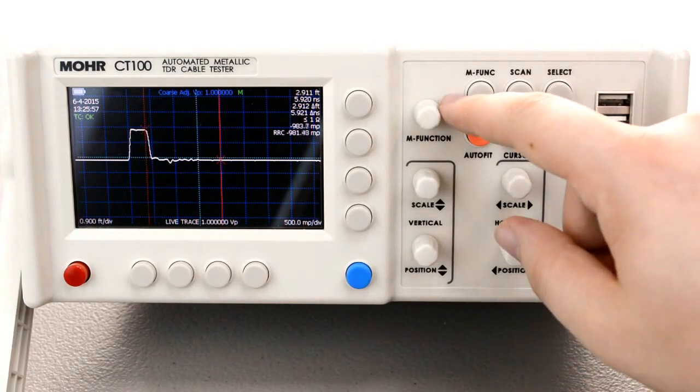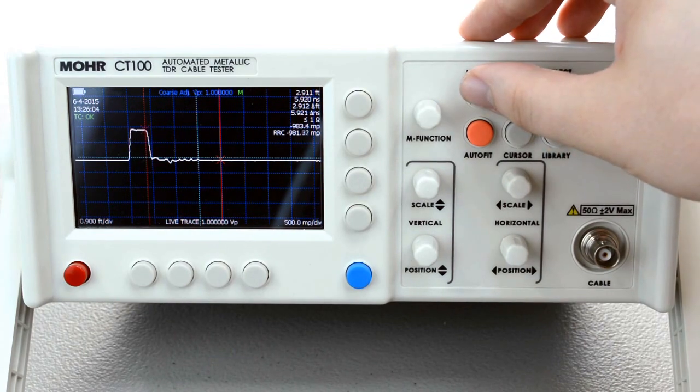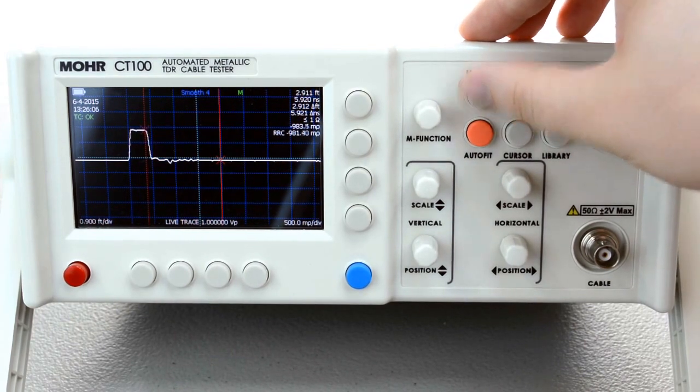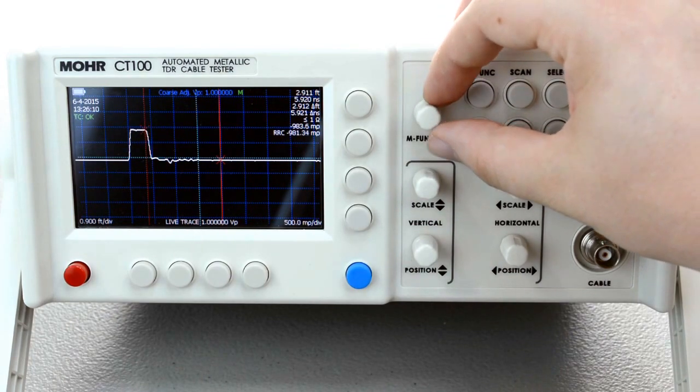Finally this is the multi-function knob and this is the multi-function button. You can change the function of the multi-function knob by pressing the multi-function button and by turning the knob you will change the value.